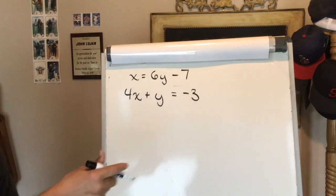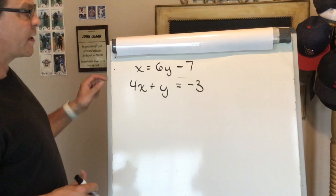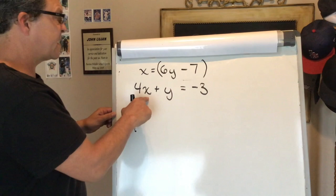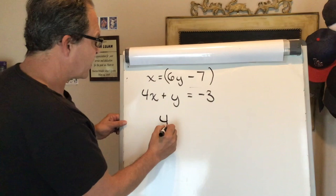All right, in this system of linear equations you can see the first equation is already solved for x. So what I'm going to do is replace the x in the second equation with 6y minus 7. So I'm going to rewrite this.